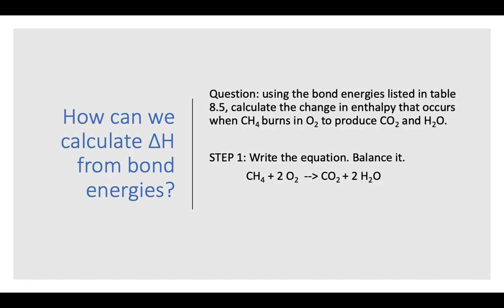Since we're talking about a chemical change, we've got to write an equation and we've got to balance it. So if I've got methane burning in oxygen producing carbon dioxide and water, then I write the formulas for each of those reactants and products, and then I put those coefficients to balance the equation. So there we have it, equation balanced.